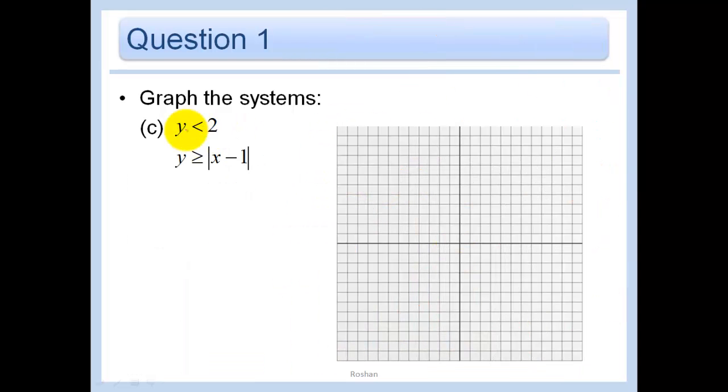So let's start with y is less than 2. So y equals 2 would just be a horizontal line at 2. Remember, the slope is 0 here. So now it's going to be dotted. And since my solution part is less than, I'm going to shade what's not the solution up here.